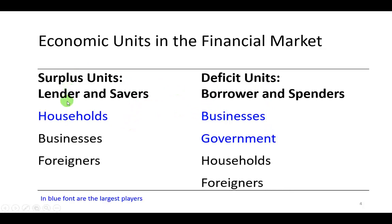Here we have the major role players in those two segments of the financial markets. In the surplus segment, the household sector — you and I — we are the largest suppliers of funds. We supply those funds when we go to banks and open a savings account, purchase stocks, and purchase bonds. Businesses are going to be needing these monies to make various investments for their investors, and governments, of course, to finance their deficit spending.